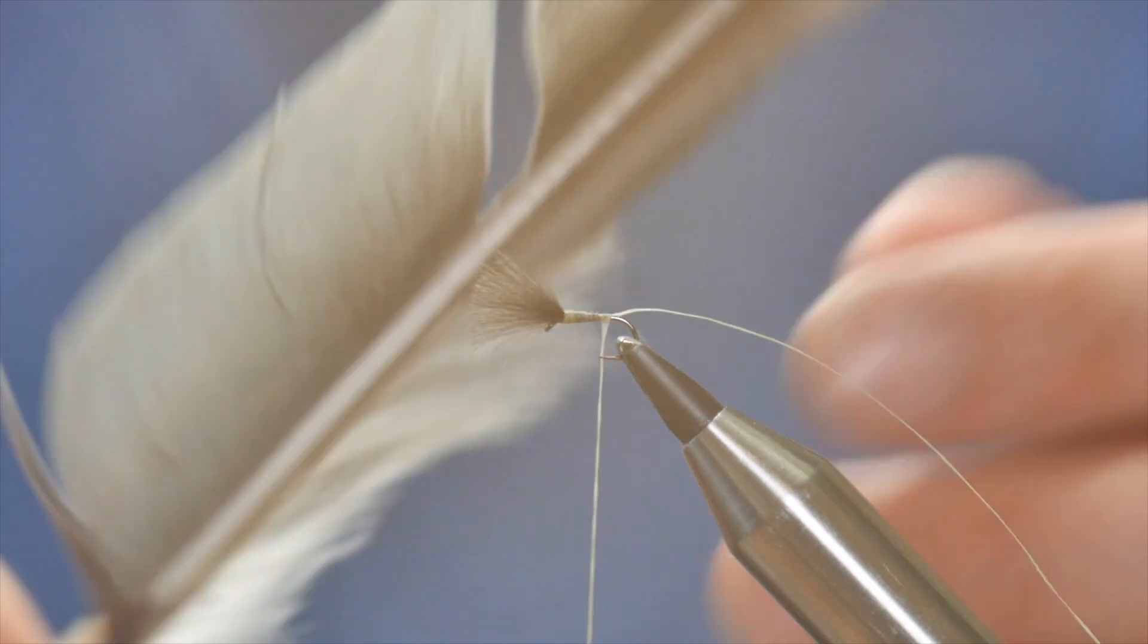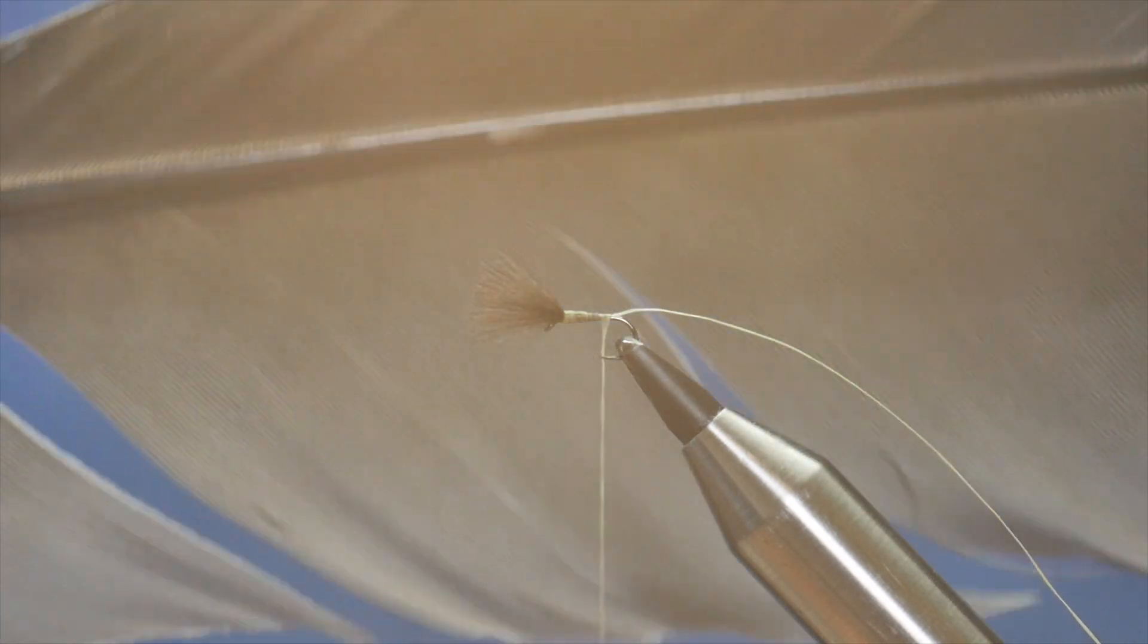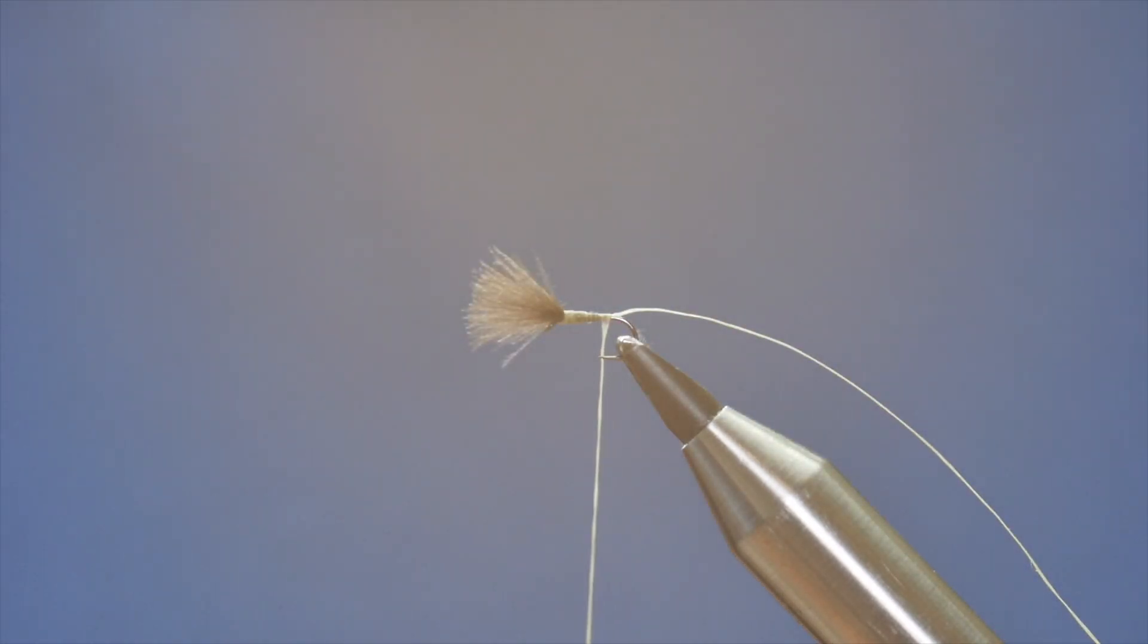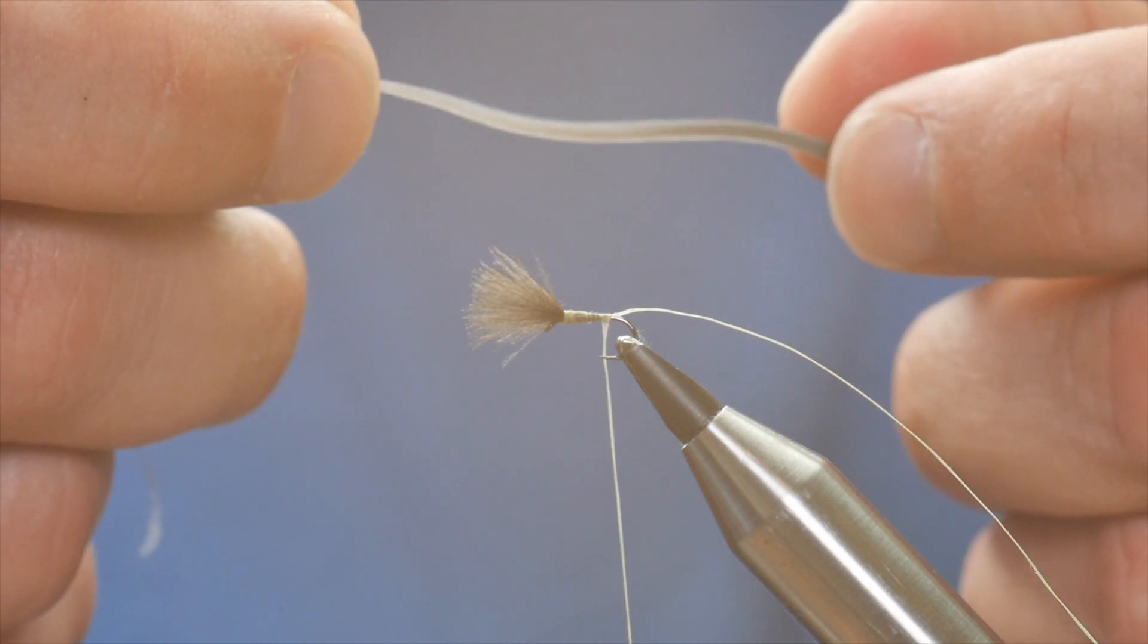So the body, I'm using this - a heron feather. Now unfortunately, you can't buy heron. It's not available in shops. The birds are protected. So you've got to either be lucky enough to stumble across a feather on the bank or rely on, like I have, the generosity of others getting you a feather.